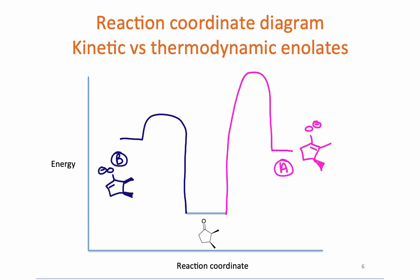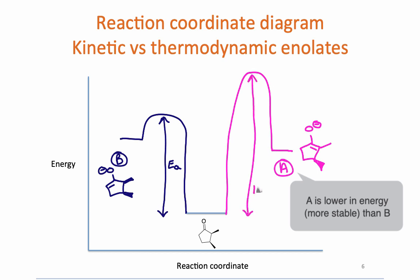So higher activation energy, more stable product; lower activation energy, less stable product. So B is going to form first, but if an equilibrium gets set up, eventually the more stable enolate A will be formed.